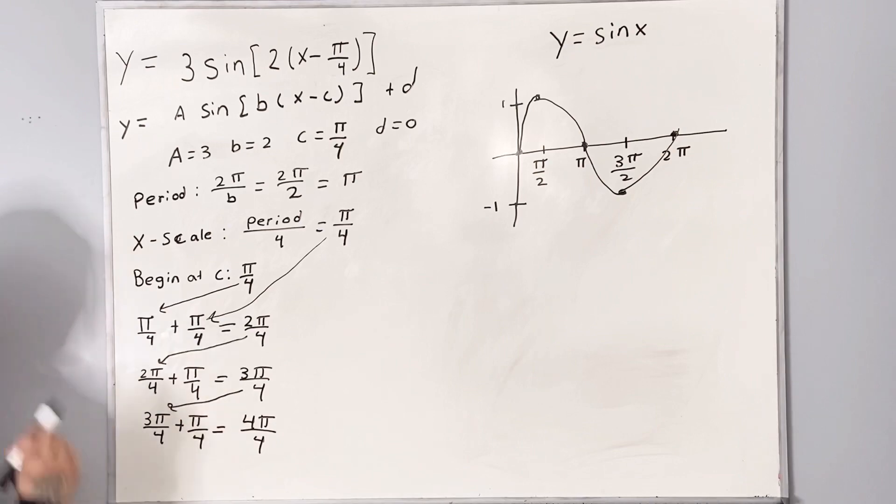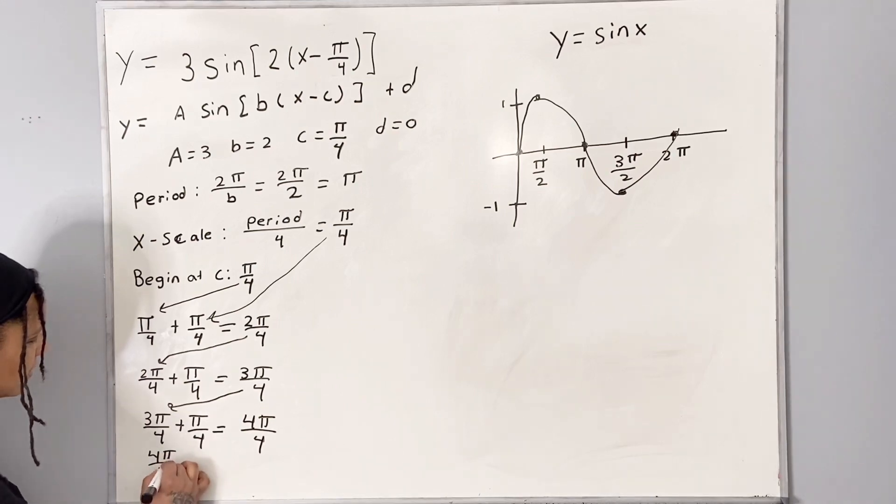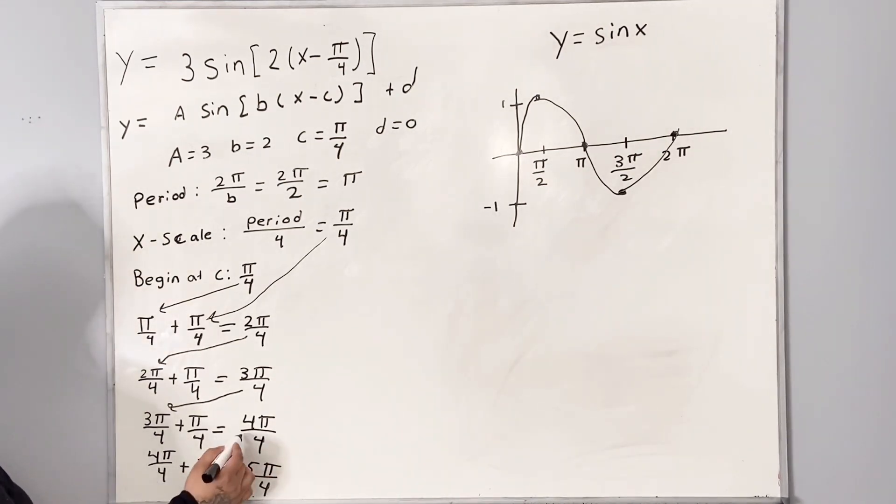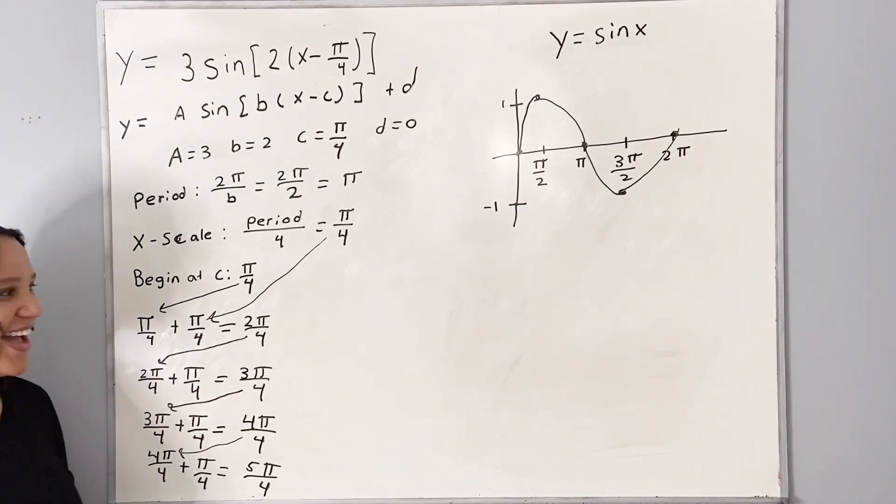And 4 pi over 4 plus another pi over 4 is equal to 5 pi over 4. And that is enough increments here to graph our sine graph.